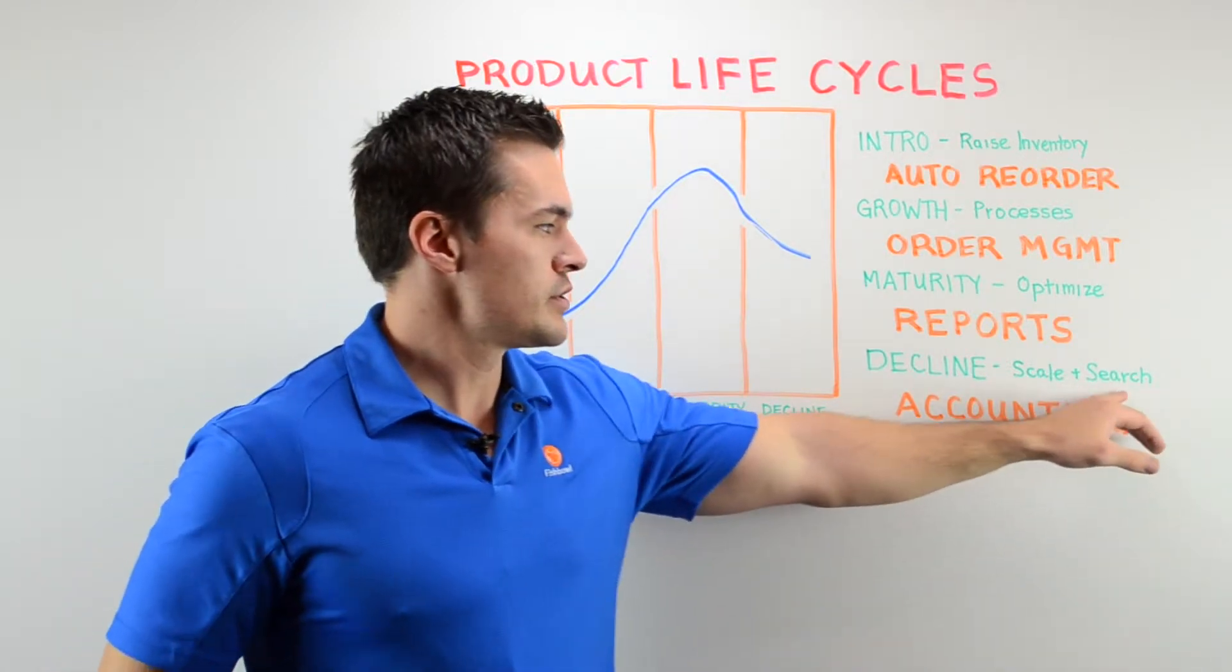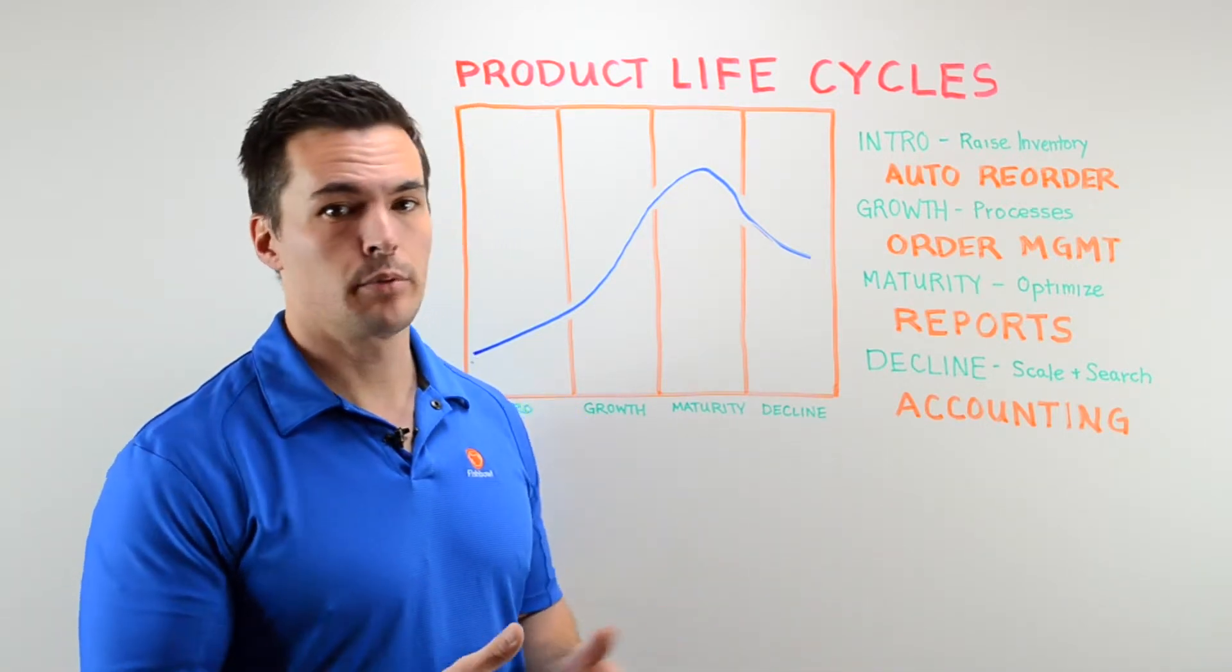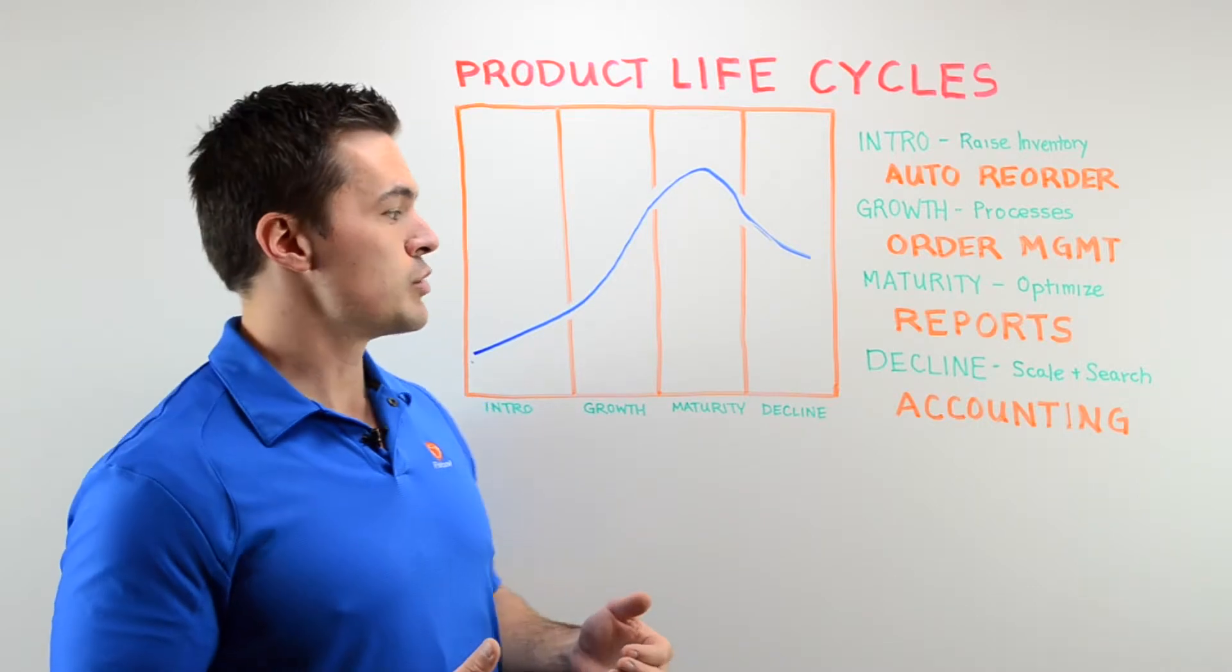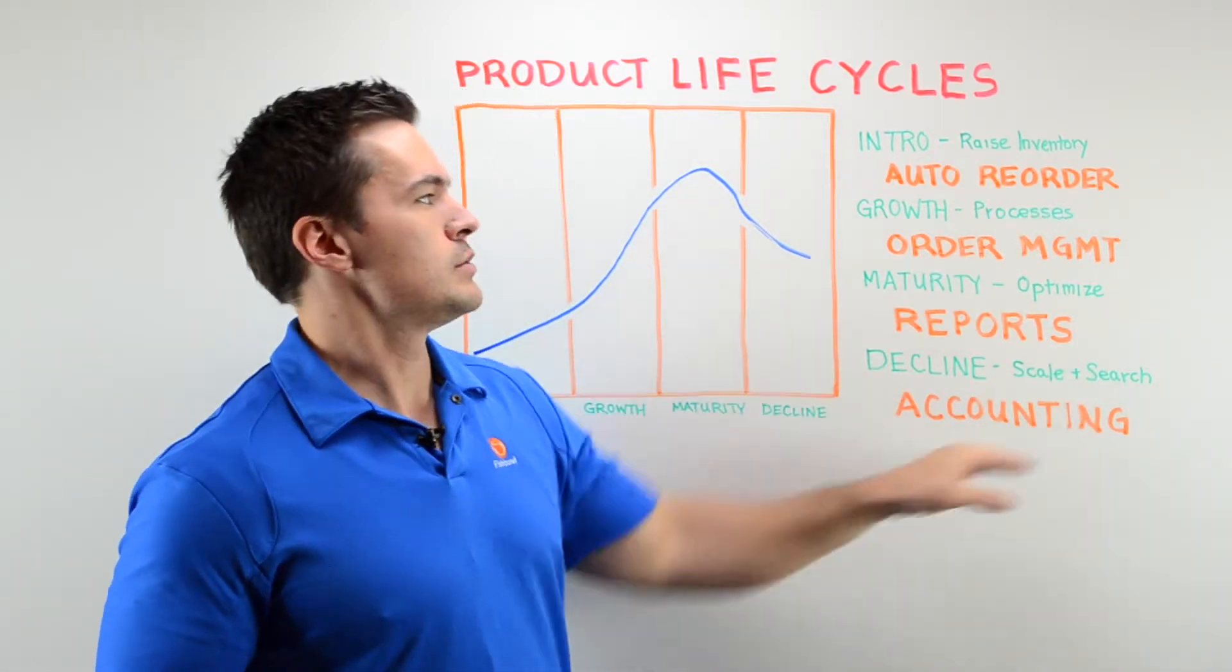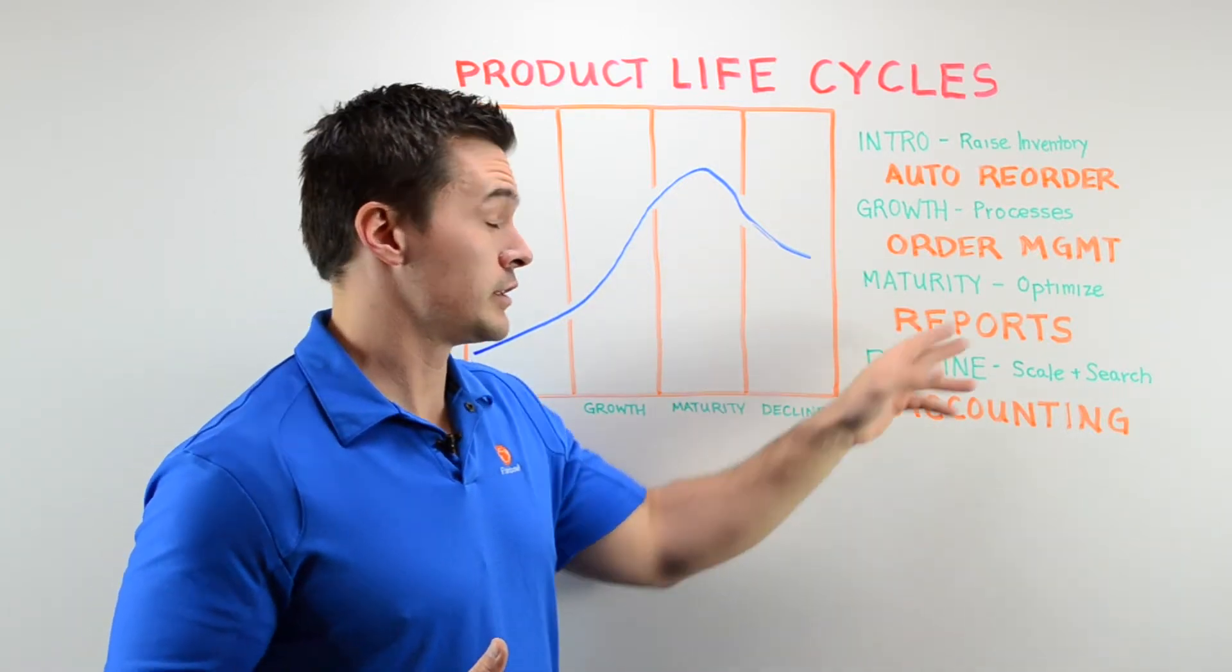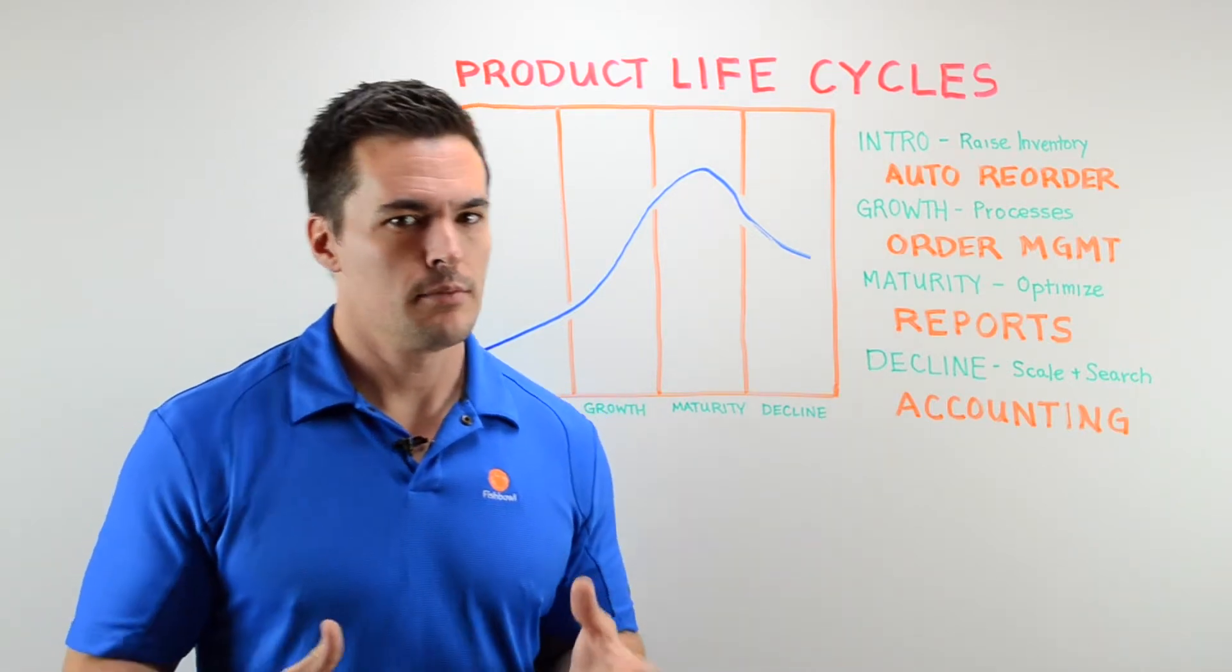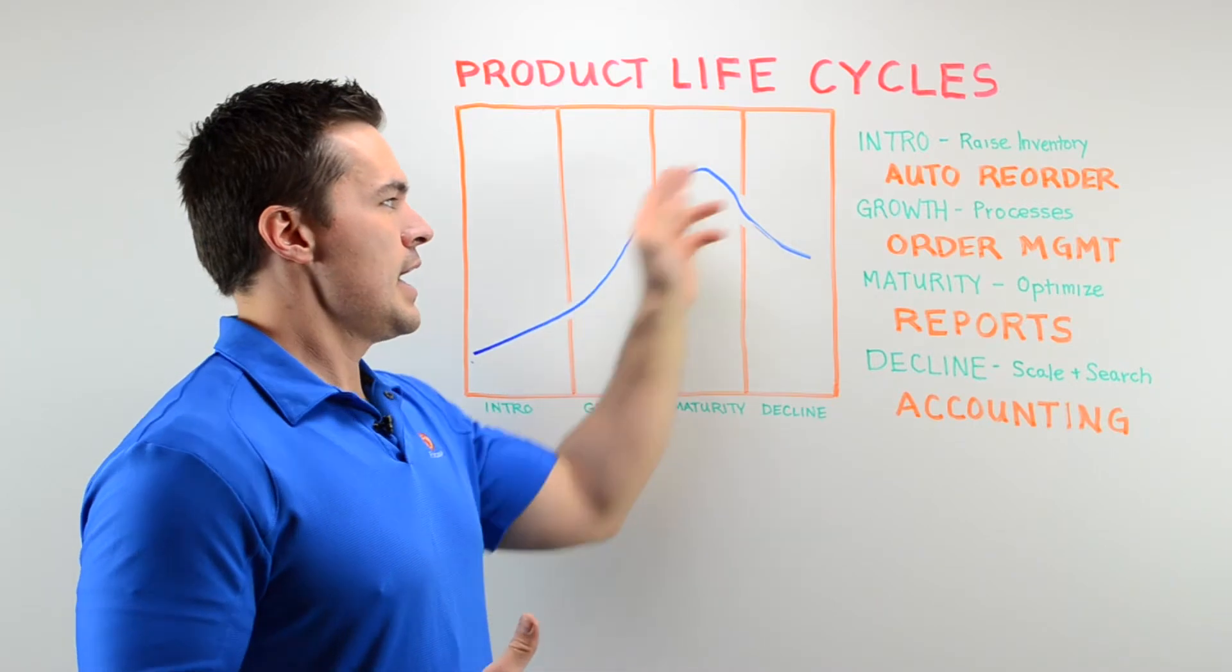On the search side, we can even go back to the reports and see what is the next product - is there a new iteration of something we already carry, is there a new trend that's popping up in our accounting? So if we can make use of our auto reorder, order management, reports and accounting, and all the other tools in our automated solution for our business processes, we can stay ahead of this curve.